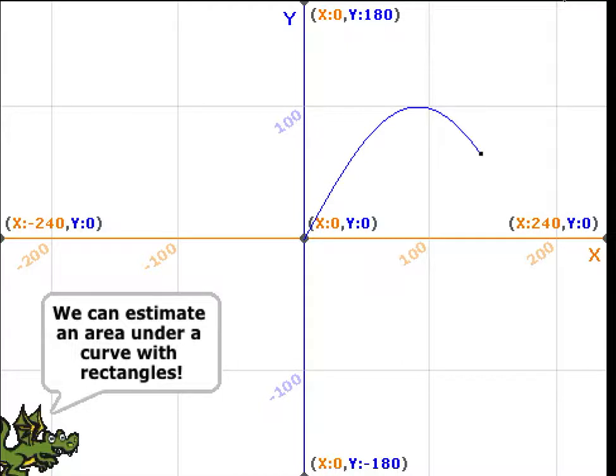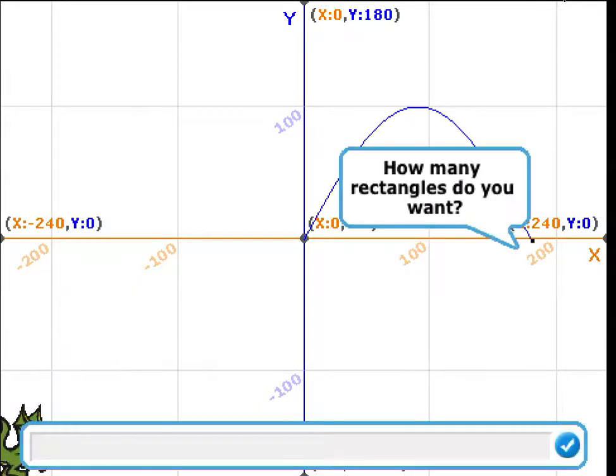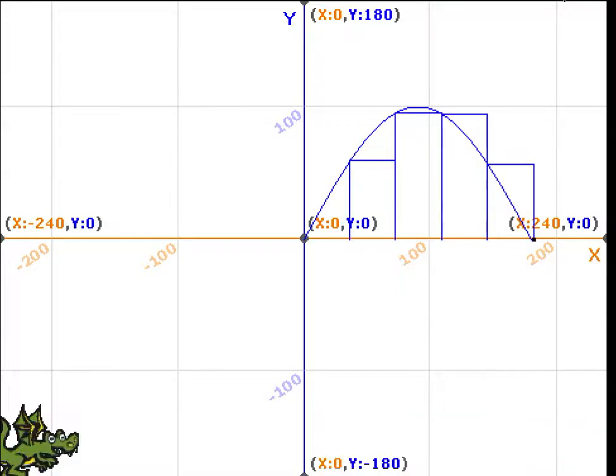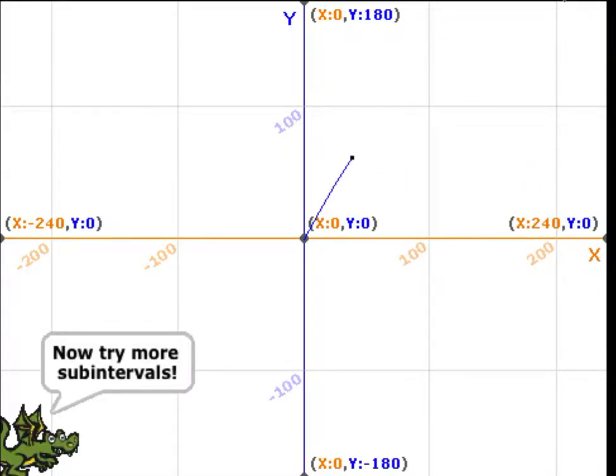Then it moves on to demonstrating integrals with Riemann sums, and it asks you how many rectangles you want under the curve. And for this case, we're going to say 5. It only draws 4, but there's actually a rectangle of height 0 on the far left.